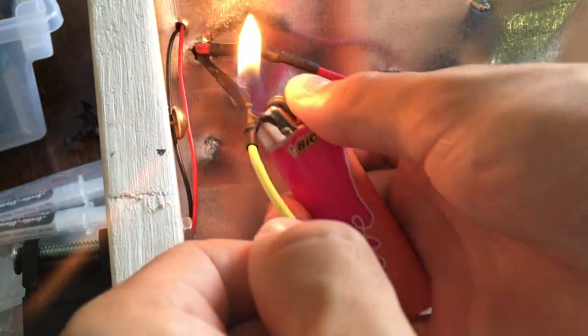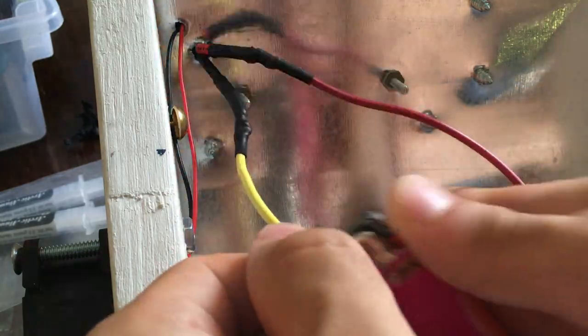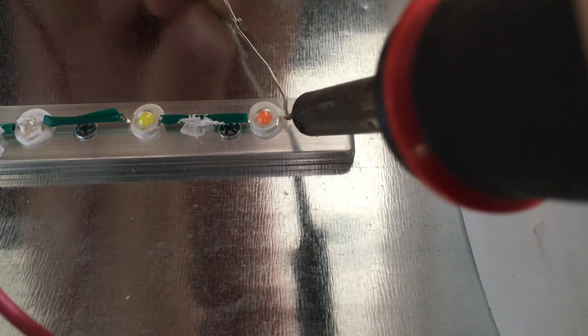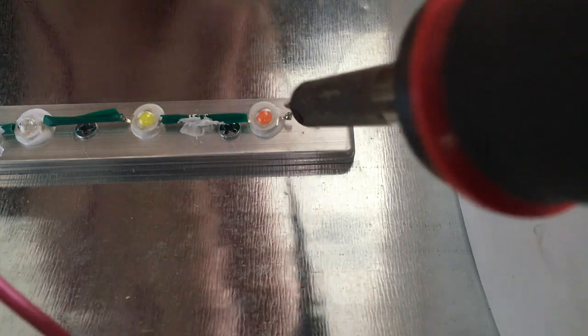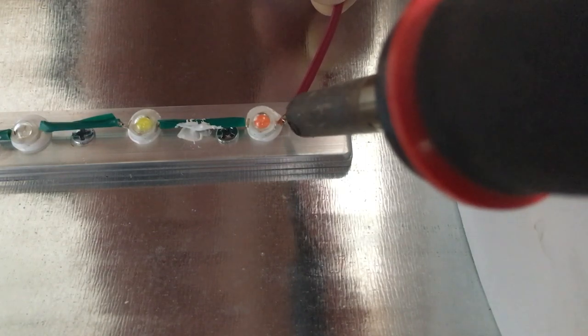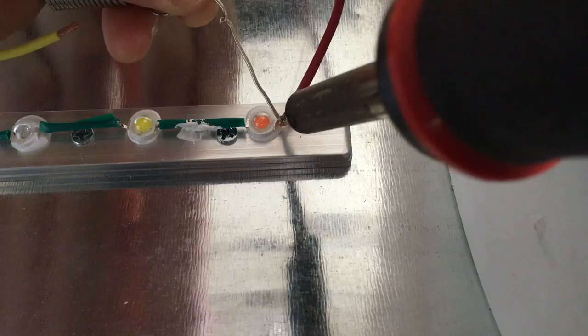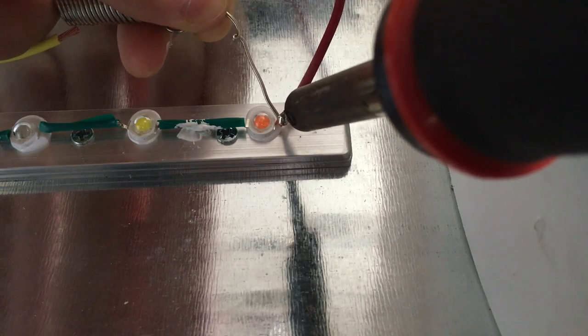There are some exposed wires, for example right on the LEDs and where the LED connects to the wires. But I hope that the ventilation fan will help with the humidity enough that these exposed places won't become an issue.